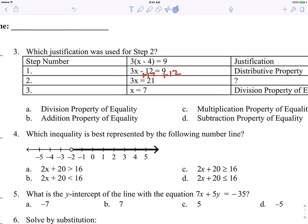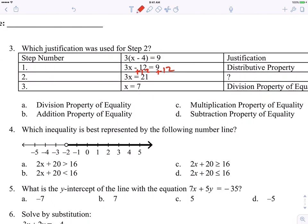Let's do another question. Number 3 here. It says, which justification was used for step 2? All right. Step 2 is a blank. And it looks like, if I'm looking at this process here, it looks like we added 12 to get 21, right?